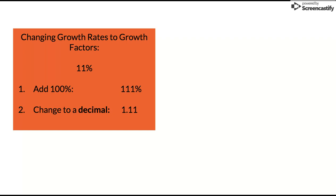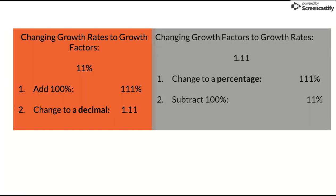To change a percent into a decimal, pretend you have a decimal at the end of 111. You move that decimal two spots over, so it'd be 1.11—that's your growth factor.